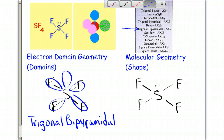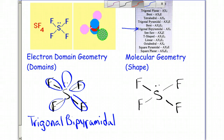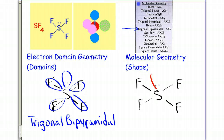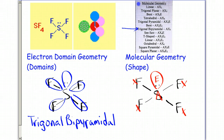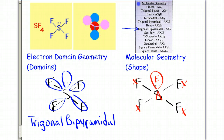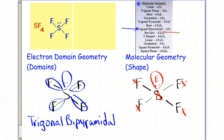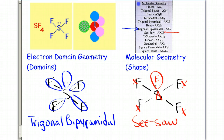Now we'll look at the molecular geometry and do our A's, X's, and E's. We have a lone pair, so that's an E. The center atom is an A, and each bonded atom is labeled X. So we have AX4E, and that gives us a shape of seesaw.